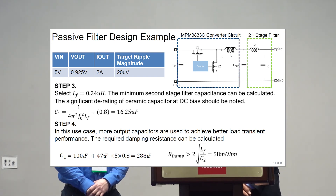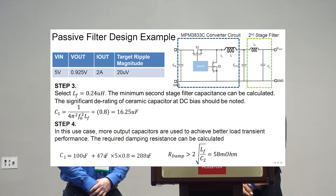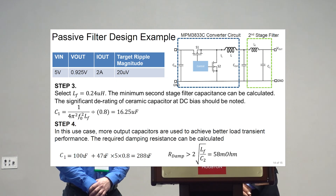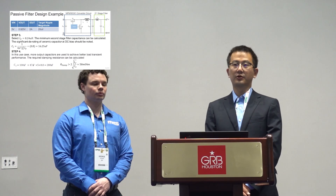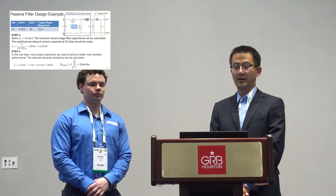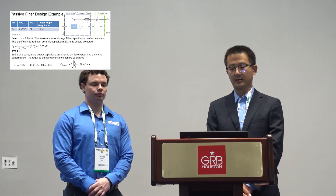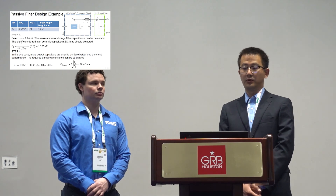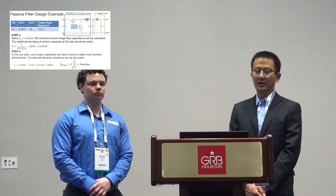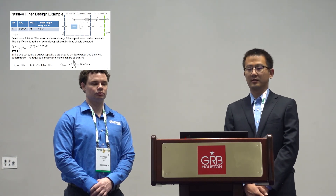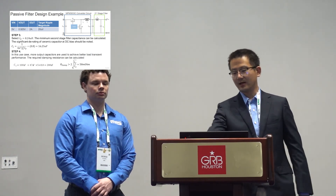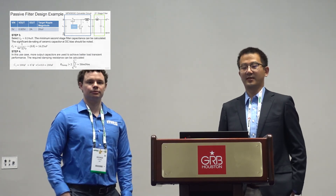The final C1 design in our customer application is 280μF. Based on the damping resistor design criteria, the corresponding damping resistor is at least 58mΩ. That's how we designed the second stage filter to achieve the ultra-low noise design. That would be all for the presentation — if there are any questions, please contact us and let us know.